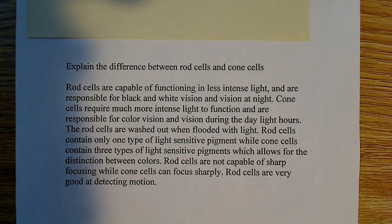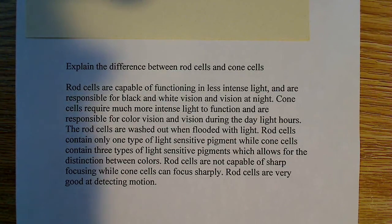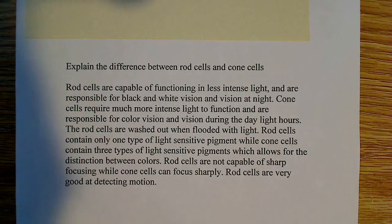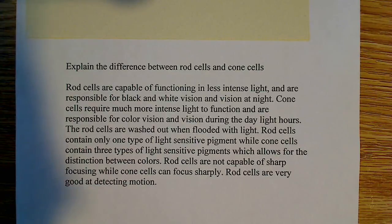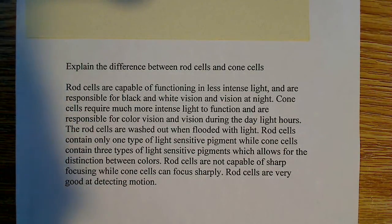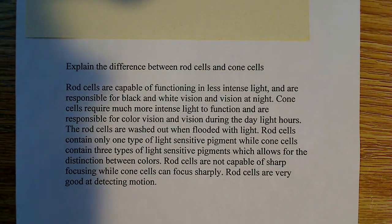Rod cells contain only one type of light-sensitive pigment. That's important because that one type of light-sensitive pigment is the reason you don't see any color vision with rod cells. That's the reason why at night, under very low light conditions, everything appears black and white — black, white, and gray. There's no real color, if you've ever noticed that before.